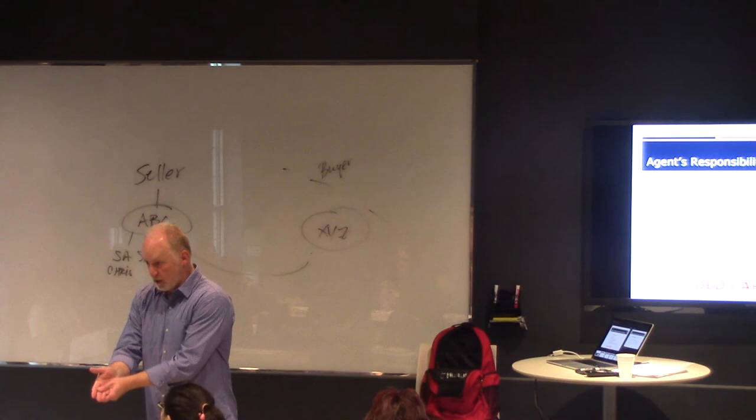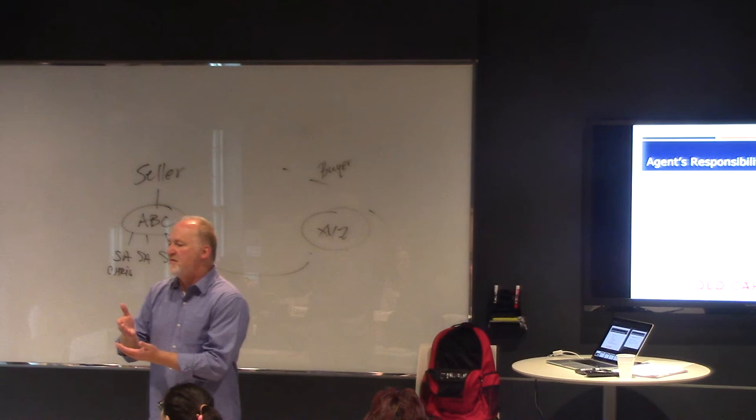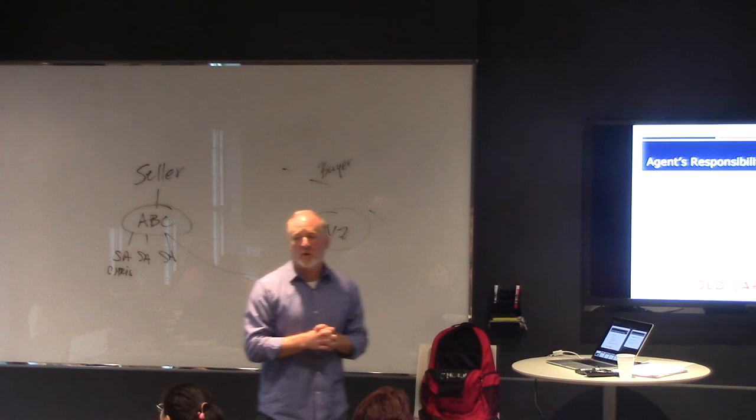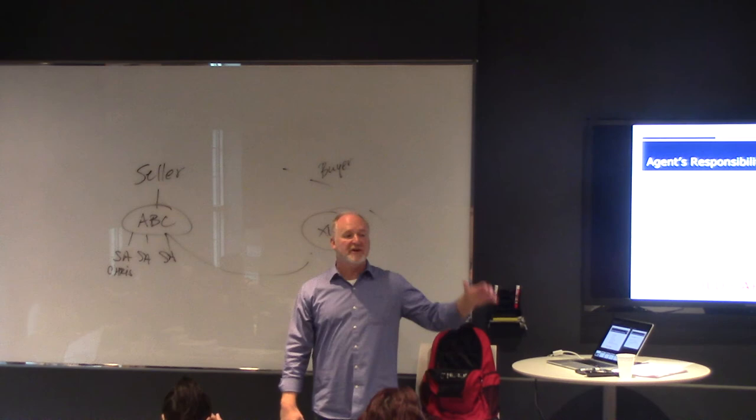They should disclose, too, that they work for the builder. And most of them that are on-site agents, well, I won't say most, they may or may not be able to offer you dual agency. Okay? But they, because they're agents, they will have to go through the process of describing who they work for. Okay? Great question. We'll get into more detail on that a little bit later. All right.